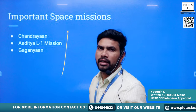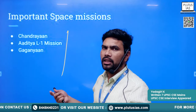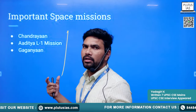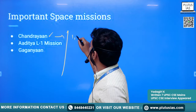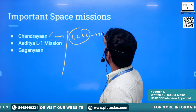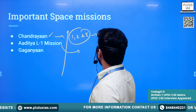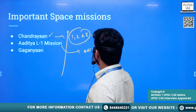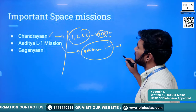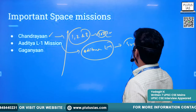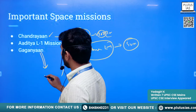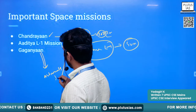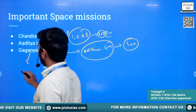Now we will see some important space missions of India. Three missions are covered: Chandrayaan-3, Aditya L1, and Gaganyaan. Chandrayaan series — we have completed missions 1, 2, and 3. In 2023, we successfully completed Chandrayaan-3. Also in 2023, we completed the Aditya L1 mission to study the sun. Gaganyaan is our prestigious project aiming to send astronauts into space.